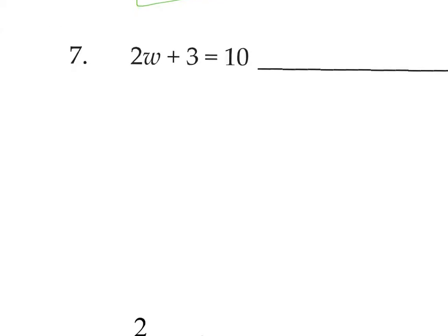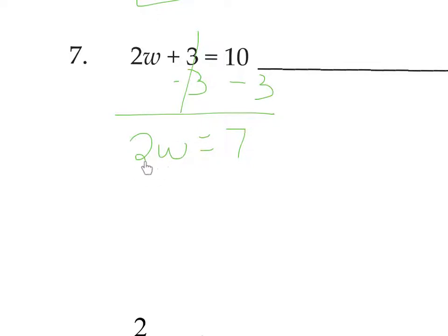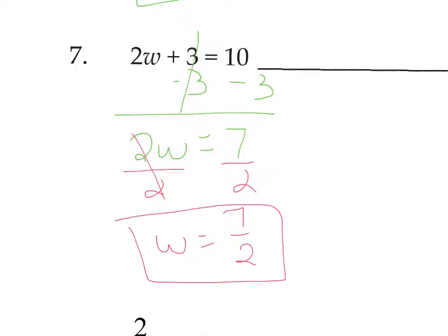On number 7, we have 2w plus 3 equals 10. We have a multiply and an add — always undo the add first. Subtract 3 from both sides: 2w equals 7. To get rid of the coefficient, divide by 2. We get w equals 7 halves. It's okay — it's reduced and improper, but it's fine. 7 halves is good because 2 doesn't go evenly into 7.